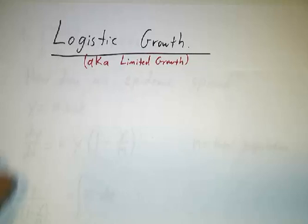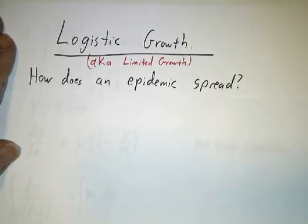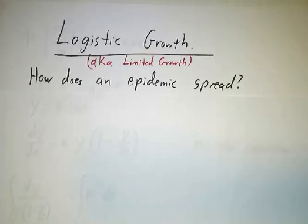And my favorite examples of logistic growth are epidemics. So we're going to examine how an epidemic spreads. And the equations are the same regardless of whether we're talking about the spread of the flu virus or AIDS, or whether we're talking about the zombie apocalypse. So let's talk about the zombie apocalypse.